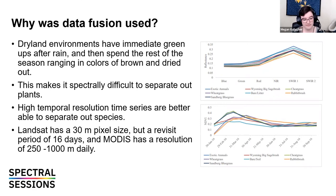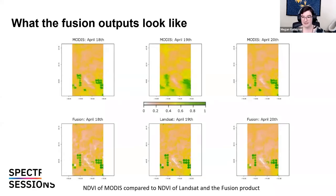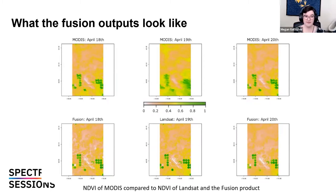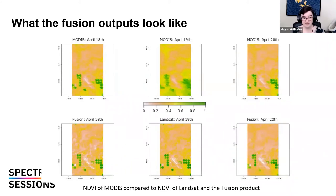The outputs: the top row shows MODIS imagery from April 18th, 19th, and 20th — a bit of a mess. In the middle row there's one true Landsat date of April 19th, looking at a small test area in the Morley Nelson Birds of Prey Park in Idaho. Around that in the bottom row are fusion products for April 18th and 19th, generated using interpolation between the Landsat product on April 19th and the MODIS products. These outputs are generated so we can use the MODIS NDVI track to interpolate for those other dates.